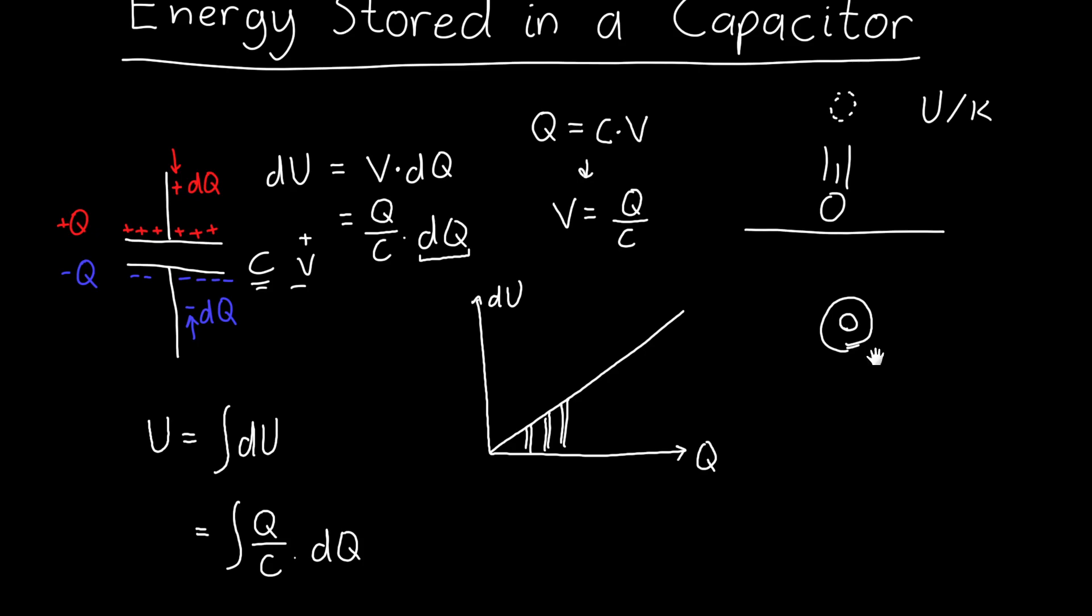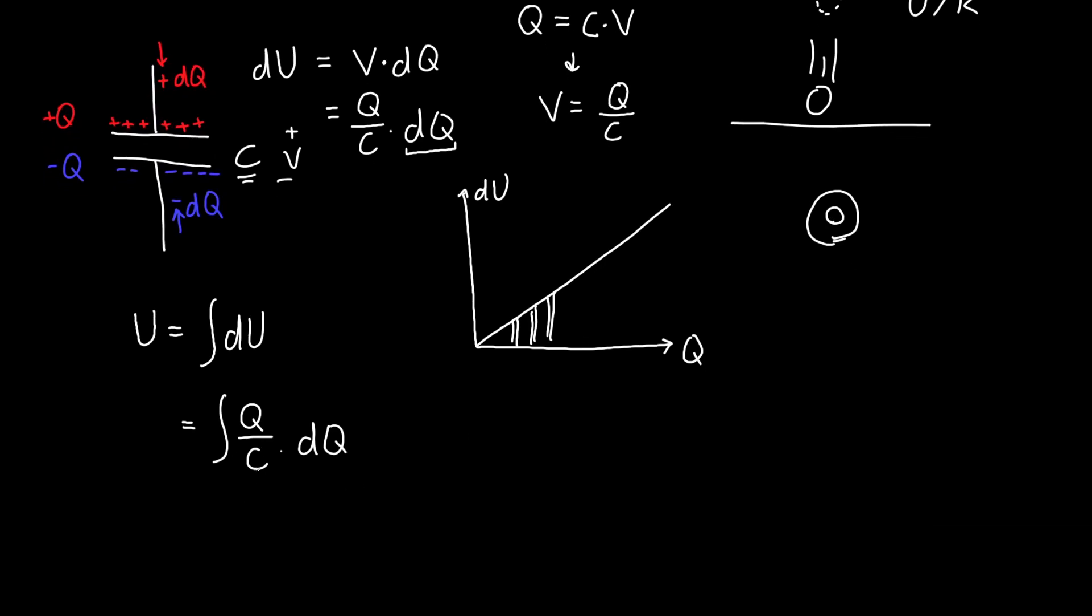But C is a constant. It doesn't change as we add more and more charge, and so we can pull it out front. And so all we need to do is integrate Q times DQ. And if we want this to be the total energy, then we should start from zero charge, so when there's nothing on the capacitor, to when there's, let's say, QF, like our final amount of charge. So we're integrating from zero to QF.